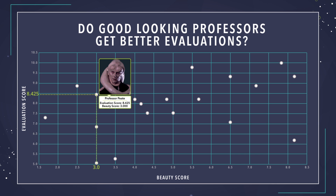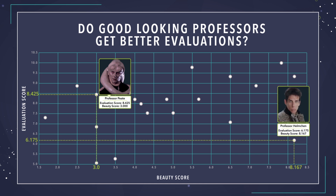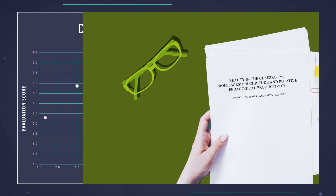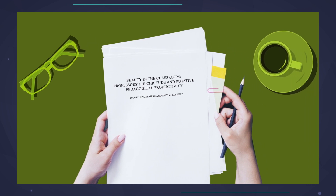For example, this dot represents Professor Pete, who received a beauty score of 3 at an evaluation of 8.425. This one way out here is Professor Holmken — ridiculously good-looking — who got a very high beauty score, but not such a good evaluation. Can you see a trend? As we move from left to right on the horizontal axis, from the ugly to the gorgeous, we see a trend upwards in evaluation scores. By the way, the data we are exploring in this series is not made up — it comes from a real study done at the University of Texas. If you're wondering, pulchritude is just the fancy academic way of saying beauty.